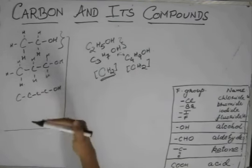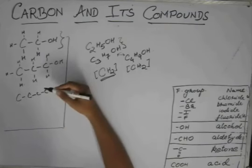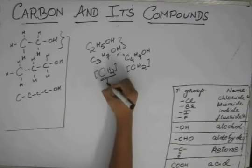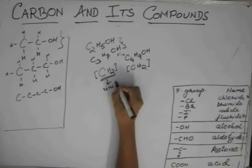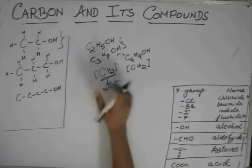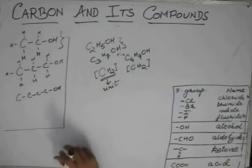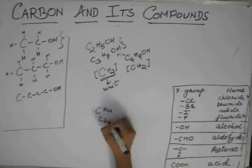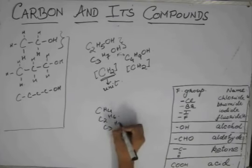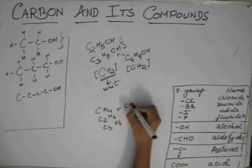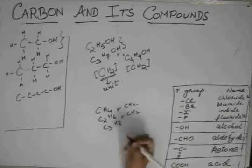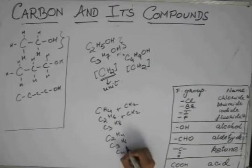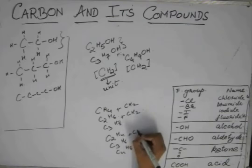So as we are increasing the number of carbons in the chain, the formula is getting increased by this CH2 unit. So this remains constant if we are adding one carbon. You will see, even in alkanes, CH4, C2H6, C3H8 - these get increased by CH2. And even in alkenes, C2H4, C3H6, C4H8 - they increase by CH2.